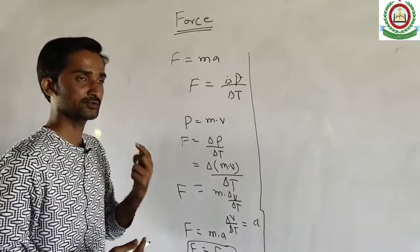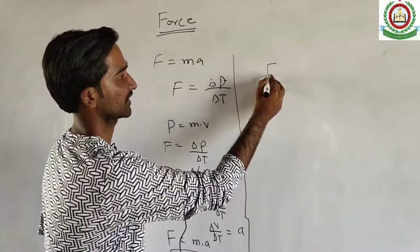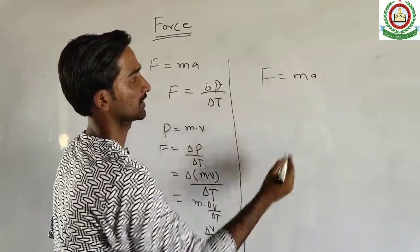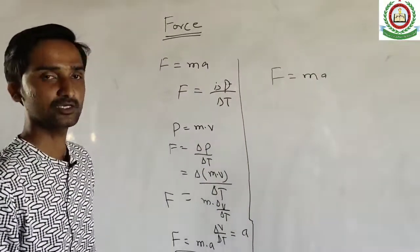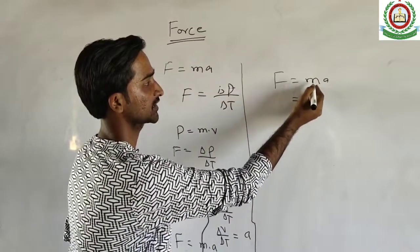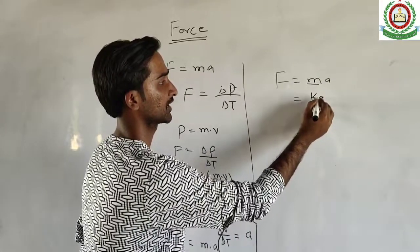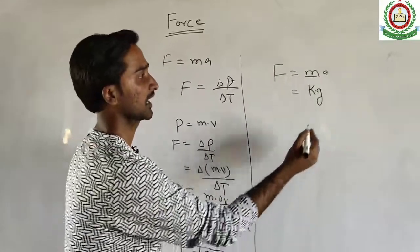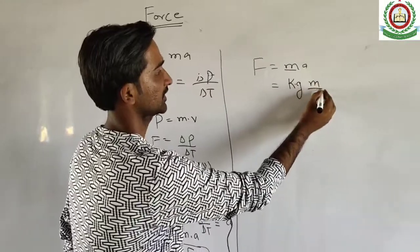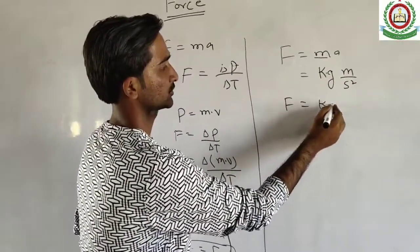F is equal to ma. The unit from this equation: mass is measured in kilograms according to SI system, and acceleration has unit meter per second square. So F has unit kilogram meter per second square.